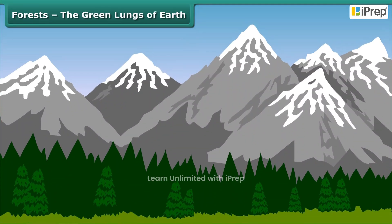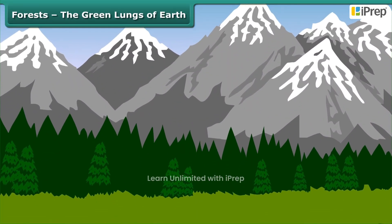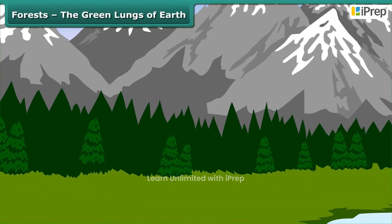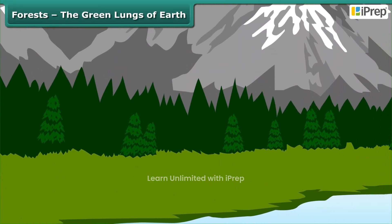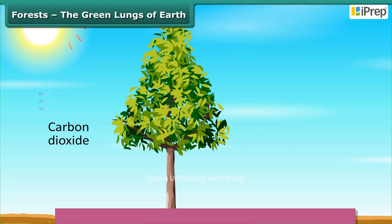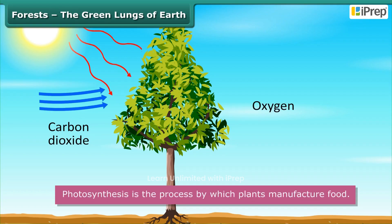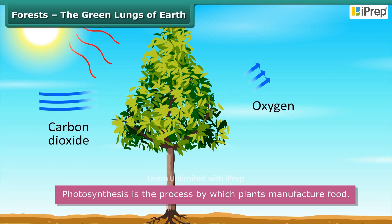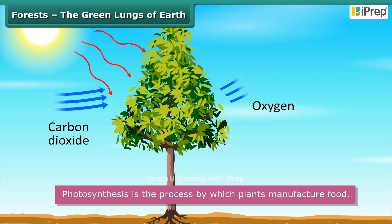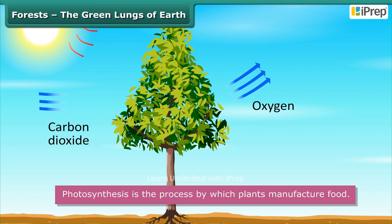Hills have dense forests. Forests maintain the balance of oxygen and carbon dioxide in the atmosphere through photosynthesis. Photosynthesis is the process by which plants manufacture food. In this process, plant leaves use the light from the Sun to synthesize food.